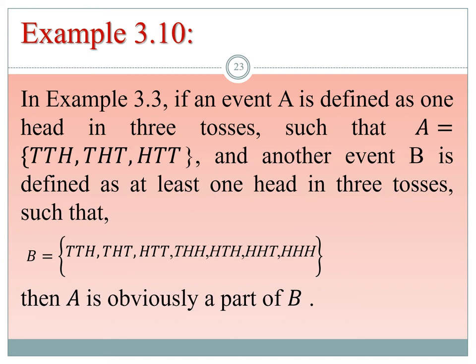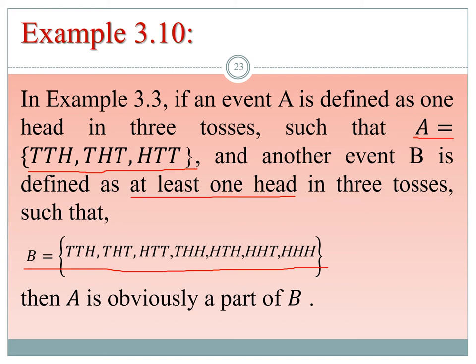For example, in the three-coin-toss experiment, if event A is defined as exactly one head in three tosses — with outcomes like THH, HTH, HHT — and event B is at least one head, which includes exactly one, two, or three heads, then clearly the three outcomes in A all belong to B. Therefore, A is a subset of B.